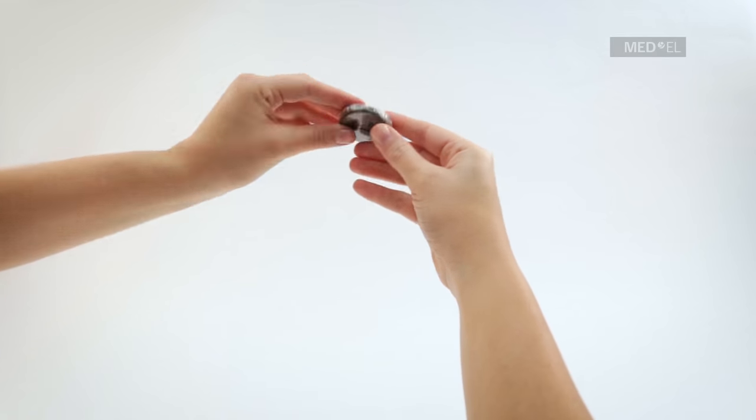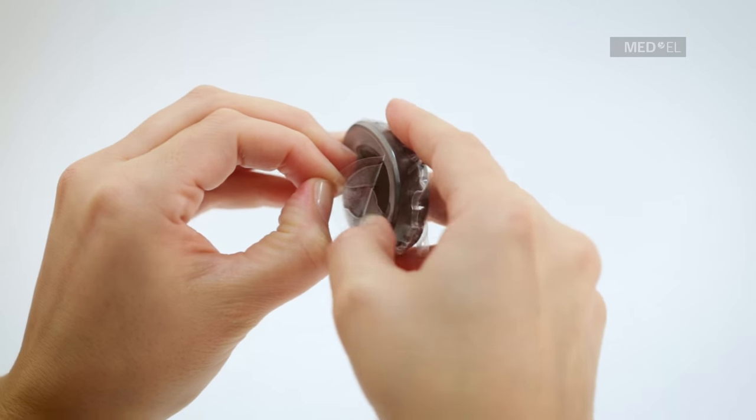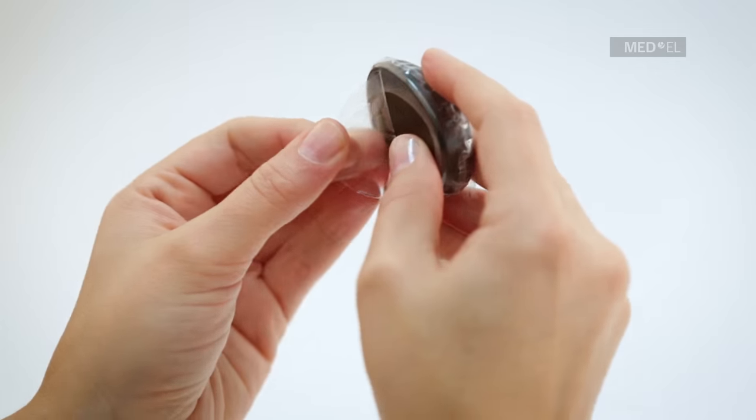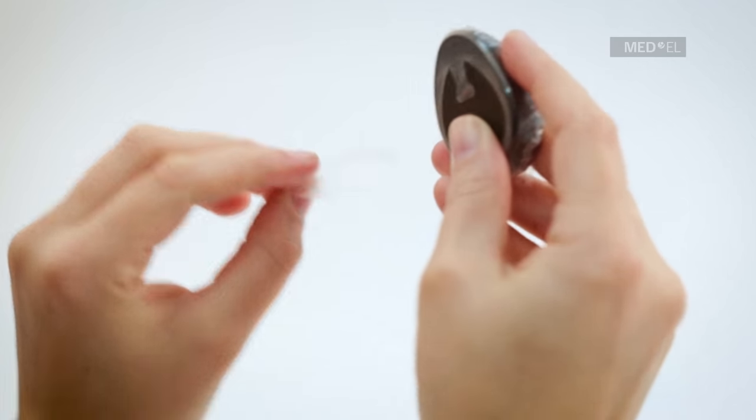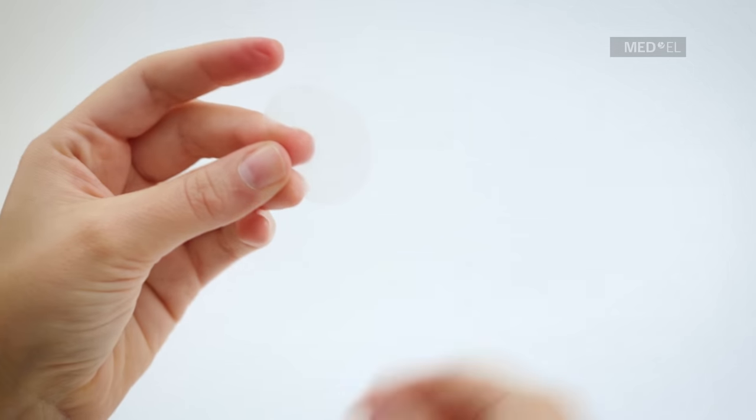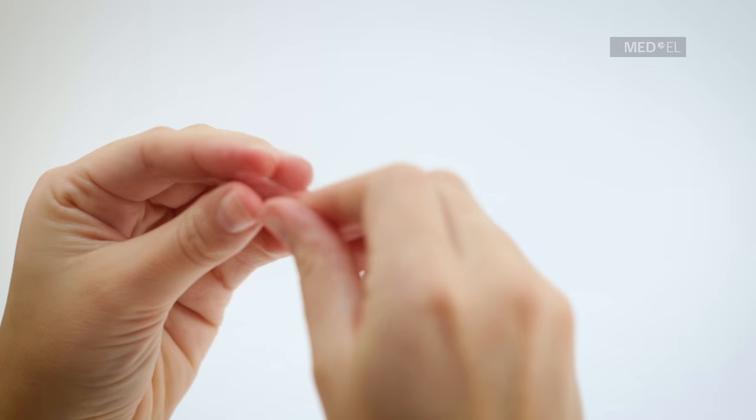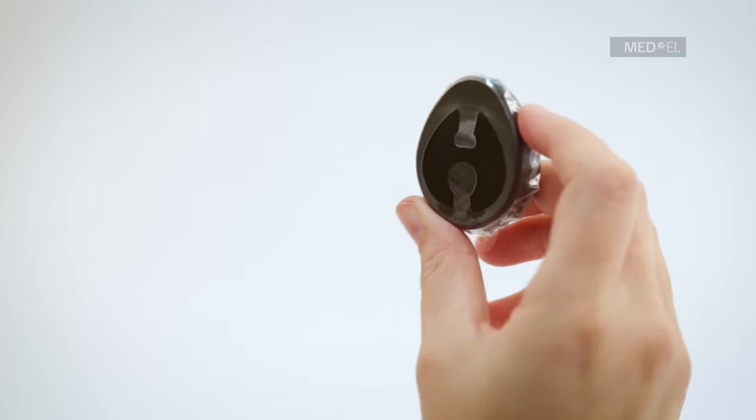To remove waterware from Rondo, carefully remove and discard the adhesive strip from the waterware. Use the circular flap of the waterware to remove Rondo from the waterware.